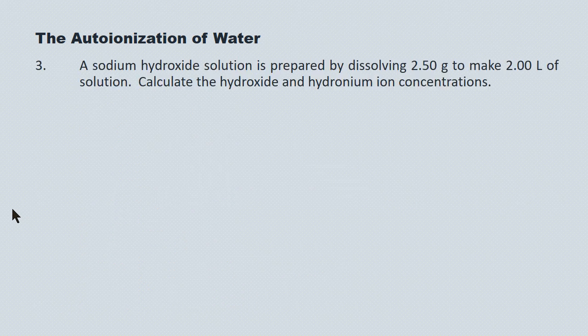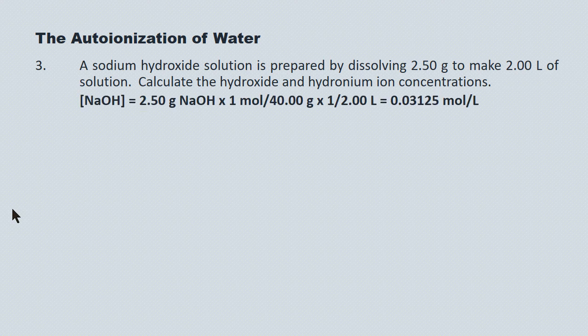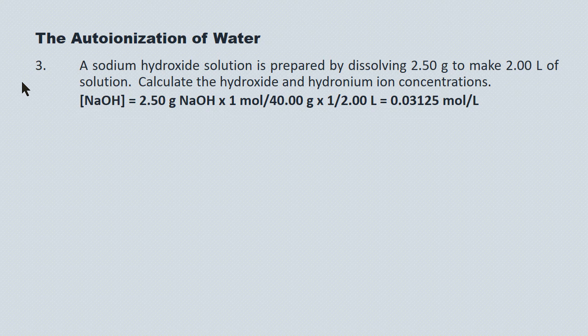A sodium hydroxide solution is prepared by dissolving 2.50 grams to make 2.00 liters of solution. Calculate the hydroxide and hydronium ion concentrations. The first step is to determine the molar concentration of sodium hydroxide: take its mass, multiply by one over its molar mass to convert to moles, then multiply by one over the volume to get molar concentration — in this case, 0.03125 moles per liter. Sodium hydroxide is a strong base, which by definition ionizes completely in water, so the sodium hydroxide disappears completely and the final concentration of hydroxide equals the initial concentration of the sodium hydroxide: 0.03125 moles per liter.